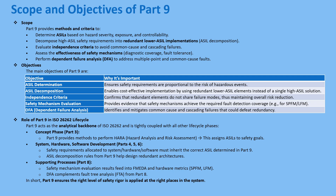Our mission today is to trace that whole analytical flow. It kicks off with defining the risk — that's ASIL determination. Then it moves through proving redundant solutions work — that's decomposition. And it wraps up with rigorous analysis checking for hidden weak spots — dependent failure analysis. Part 9 gives you the methods: how to determine ASILs, how to break down high-ASIL requirements, how to evaluate independence, and perform DFA — making sure the right level of safety rigor gets applied just where it's needed.